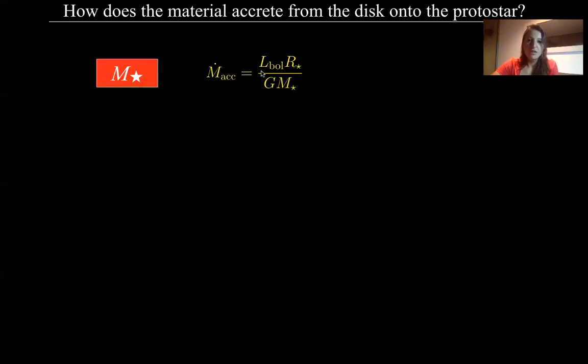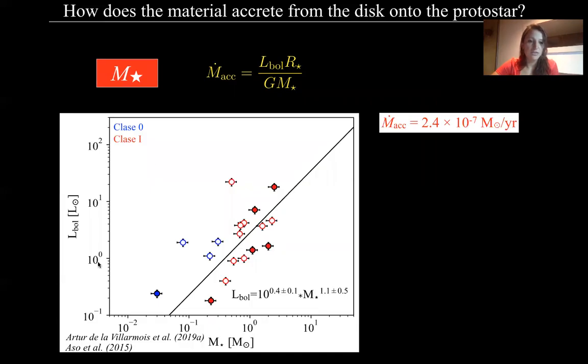And the mass of the protostar is related with the mass accretion rate. Before, the only observable in this equation was the bolometric luminosity. But now with the disk tracers we can also estimate the protostellar mass. And with this we did a plot of protostar mass versus the bolometric luminosity, and we plot here Class 1 sources in red and Class 0 sources in blue. The filled dots are data from our observations and the other ones are from the literature, in particular from Hsu et al. 2015.